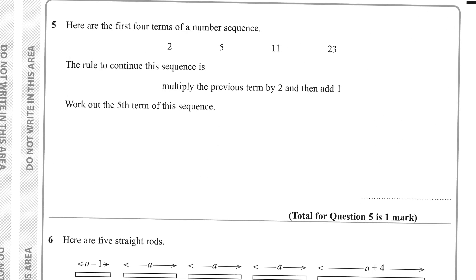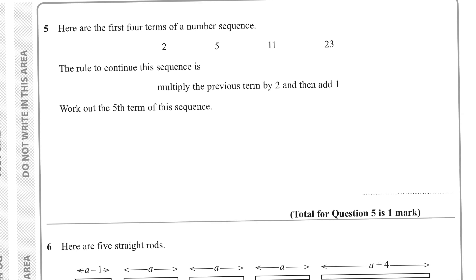Question five: the rule of the sequence is multiply the previous term by 2 then add 1. The last term given is 23. So 23 times 2 is 46, then 46 plus 1 gives the next term: 47.